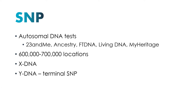SNPs are reported in autosomal DNA tests, and these are the types of DNA tests that are done by 23andMe, Ancestry, Family Tree DNA, Living DNA, and MyHeritage. They examine around 600,000 to 700,000 locations in your chromosomes where SNPs are known to occur.